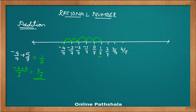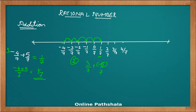Let's take one more example. The next example is: let's add 3 by 7 and minus 6 by 7. I'll change it to 6 to give a small variation, so here we have minus 6 by 7 to be added with 3 by 7.